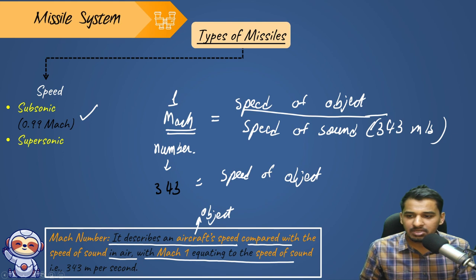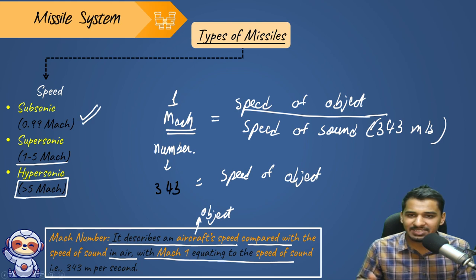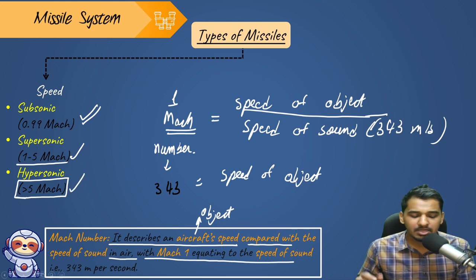Second, we have supersonic, where speed is from Mach 1 to Mach 5. And last, we have hypersonic, where speed is greater than Mach 5. So to summarize: up to 0.99 Mach is subsonic, 1 to 5 Mach is supersonic, and greater than 5 Mach is hypersonic. This classification is based on speed.